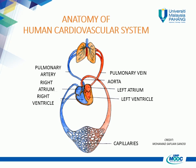The heart contracts and relaxes automatically about 70 times a minute to pump blood out through the arteries. The heart has two sides separated by a muscle wall called the septum. The right side is smaller and weaker — it pumps blood only to the lungs. The stronger left side pumps blood around the body. Each side of the heart has two chambers: an atrium at the top where blood accumulates from the veins, and a ventricle below that contracts to pump blood out into the arteries. The ventricles have much thicker muscular walls as they have to pump blood further around the body.